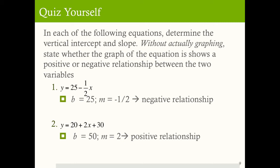For the first equation, the vertical intercept b equals 25 and the slope is negative one-half, which tells us there's a negative relationship between x and y — when x increases by one unit, y falls by one-half. For the second equation, you need to add 20 and 30 to find that when x equals zero, y equals 50, so the vertical intercept is 50. The slope is 2, so that's a positive relationship — when x increases by one unit, y increases by two units.